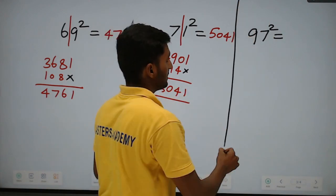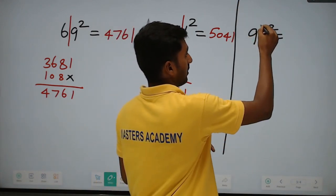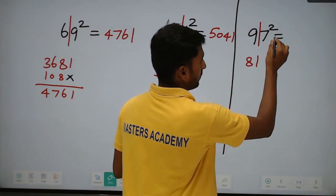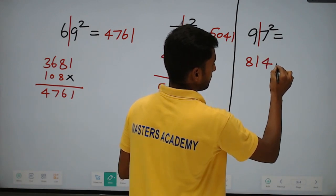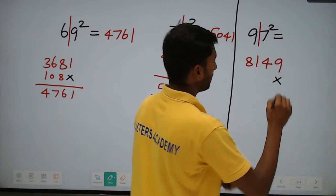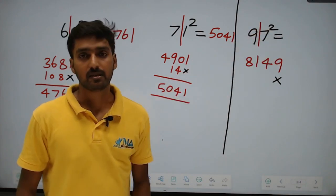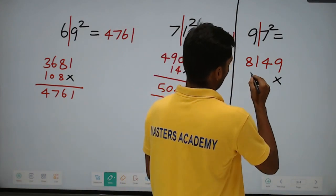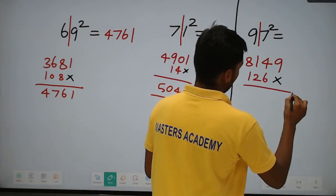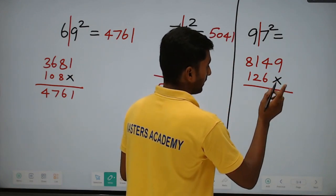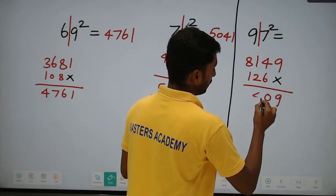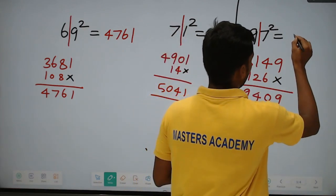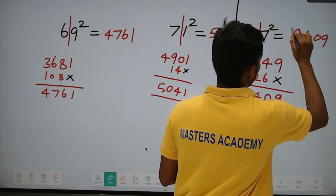For 97 squared: split the digits — 9 squared equals 81, 7 squared equals 49. Multiply: 9 into 7 equals 63, double it to get 126. Adding with carries: 6 into 0 carry 1; 1 plus 1 equals 2; 2 plus 2 equals 4; 1 plus 8 equals 9 — giving 9409. So 97 squared equals 9409.